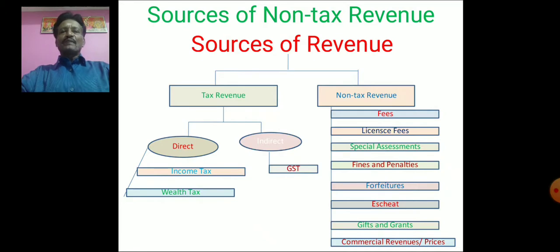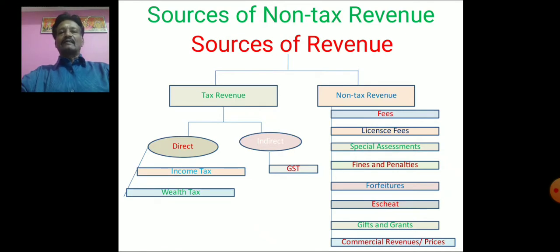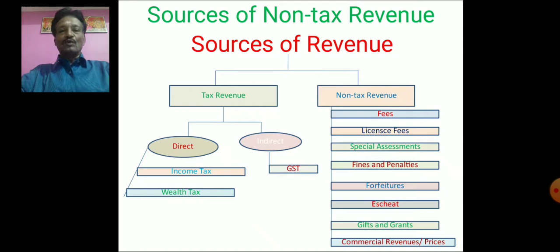What do we mean by direct tax? Direct tax means if the impact and incidence fall on the same individual, the tax is said to be direct. For example, income tax and wealth tax. Under income tax, the government imposes tax on the income of the people, so the taxpayer is the tax bearer. It is not possible for the taxpayer to transfer his tax burden to somebody else.